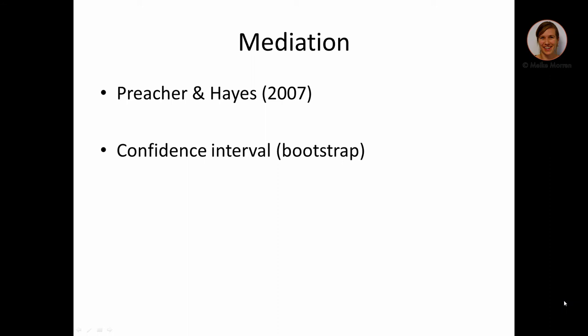Next we will discuss mediation. We will use the SPSS macro developed by Preacher and Hayes. The coefficients using this macro are exactly the same as the linear regression estimates; however, the confidence interval differs for the indirect effect. In mediation, you calculate the indirect effect by multiplying two coefficients, but to obtain the confidence interval, Preacher and Hayes propose bootstrapping — taking at minimum 1,000 samples from your sample, calculating the effect in each, and using those estimates to construct the confidence interval.